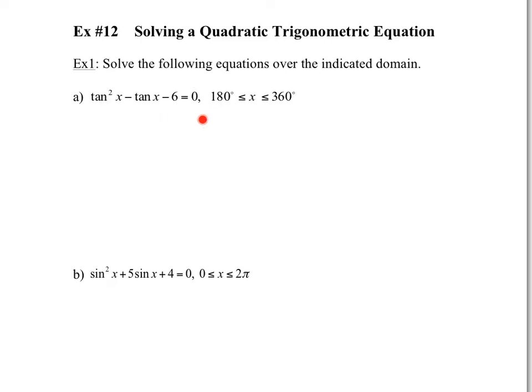For the first question, notice that you have tan²x minus tanx minus 6 equals 0. To solve that equation, you have to imagine that you're solving basically a normal quadratic equation. I'll say tanx is equal to t. So what this equation really is, is t squared minus t minus 6 equals 0. From grade 11 pre-cal, all you need to do here is factor, and then you'll have two different equations for your variable.